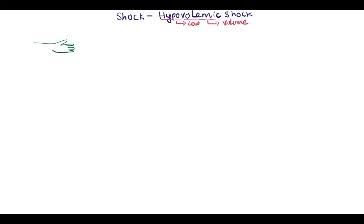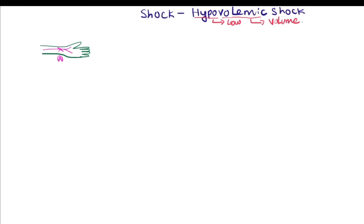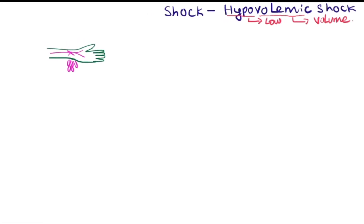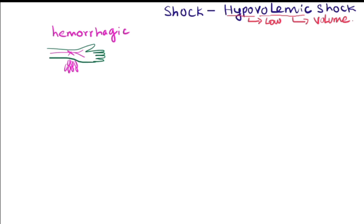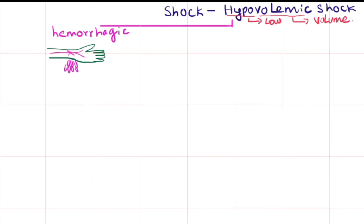Coming to the classifications of hypovolemic shock: the first and most common cause is hemorrhage. Hemorrhage can be internal, external, fetoplacental, or fetomaternal.